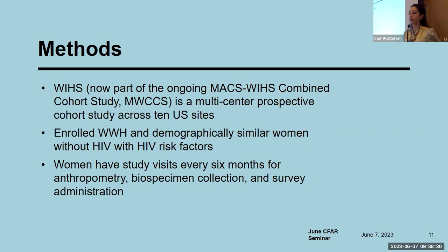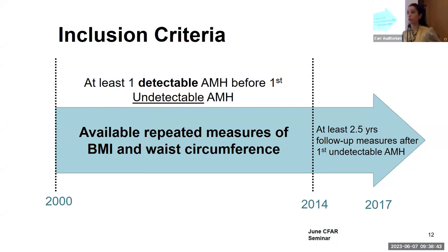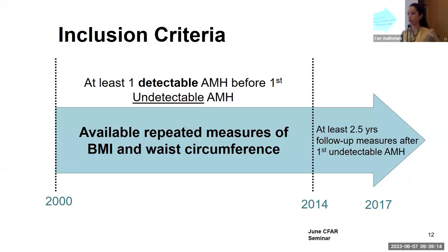We hypothesized that women with HIV would have different BMI and waist circumference trajectories than women without HIV, and that HIV-associated factors would influence body composition changes. For this study, we used anti-Müllerian hormone to determine menopausal status. Inclusion criteria required women to have at least one detectable AMH before their first undetectable AMH between 2000 and 2014. We started from 2000 to mitigate potential effects from older antiretroviral regimens associated with body composition changes. Participants needed repeated measures of BMI and waist circumference after their first undetectable AMH through 2017, when we had our most recent AMH measures.